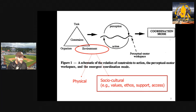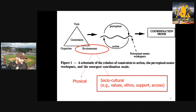Things we know are important but don't really study and talk about a lot are the social-cultural constraints that an athlete or performer is embedded in. So things we're talking about here are the values, the ethos, the support like family and social support a player has, their access to playing surfaces, facilities, and so on. Obviously all of these things are also going to shape how skill evolves in a certain performer, along with the other more specific task and environmental constraints.